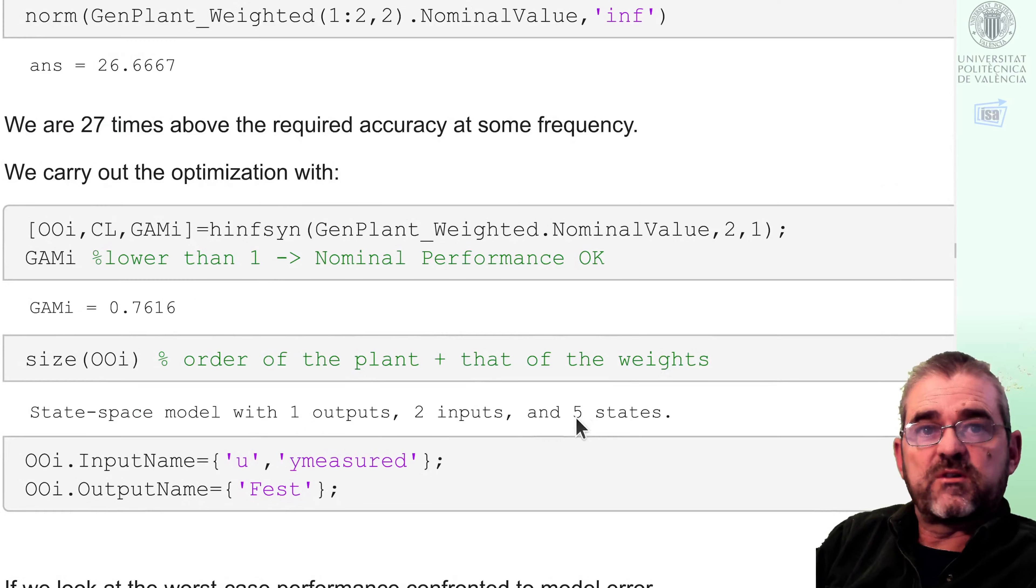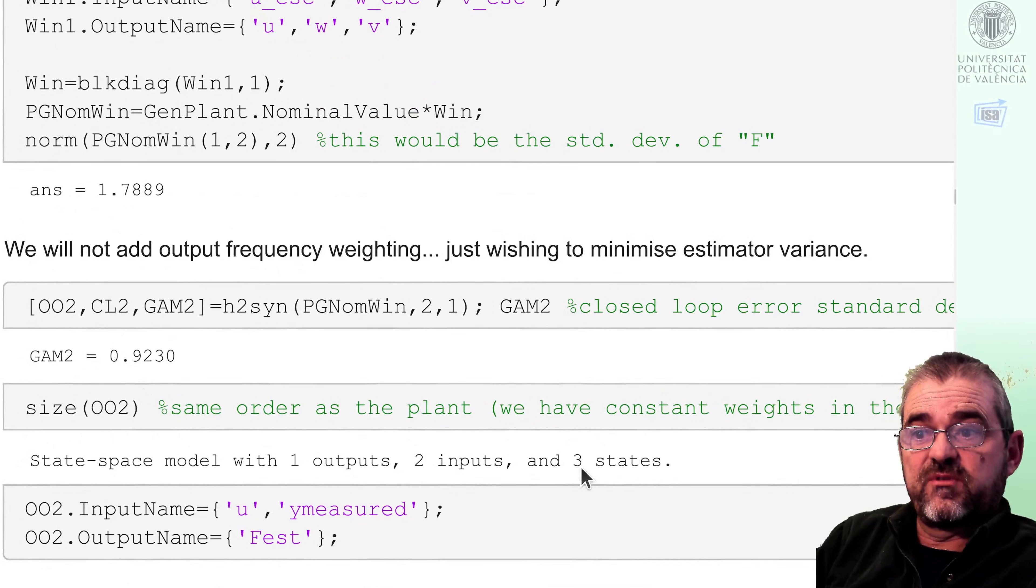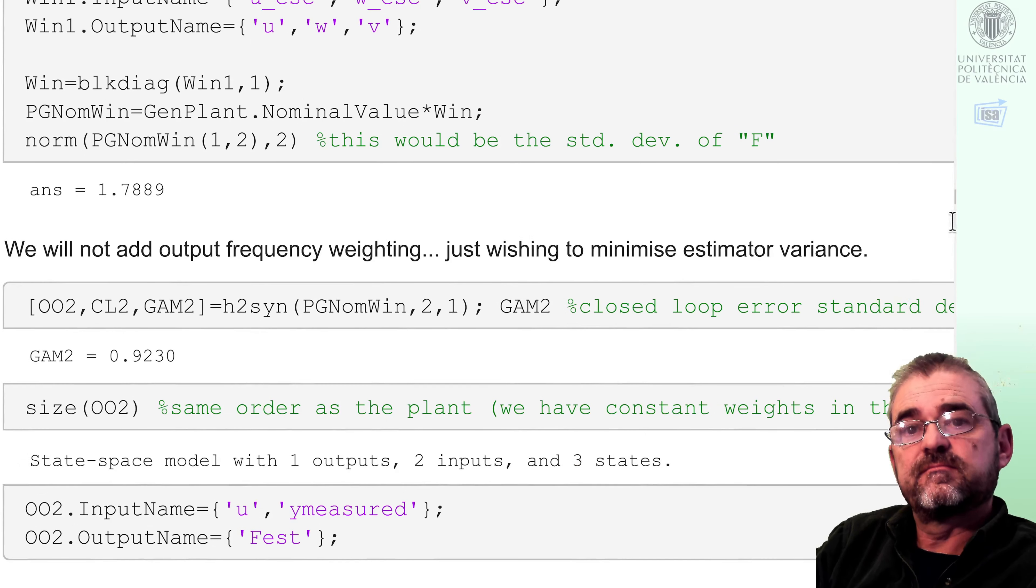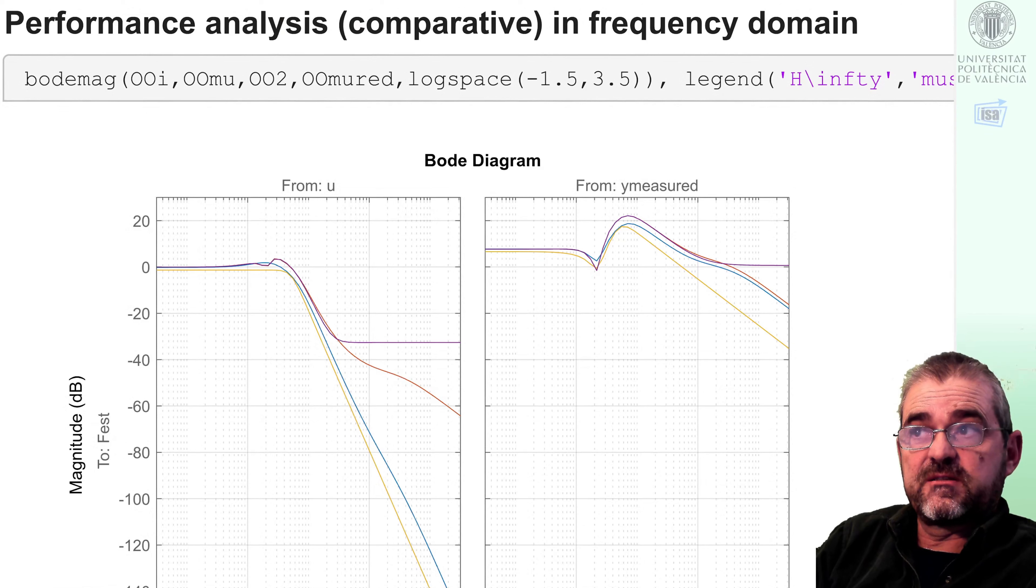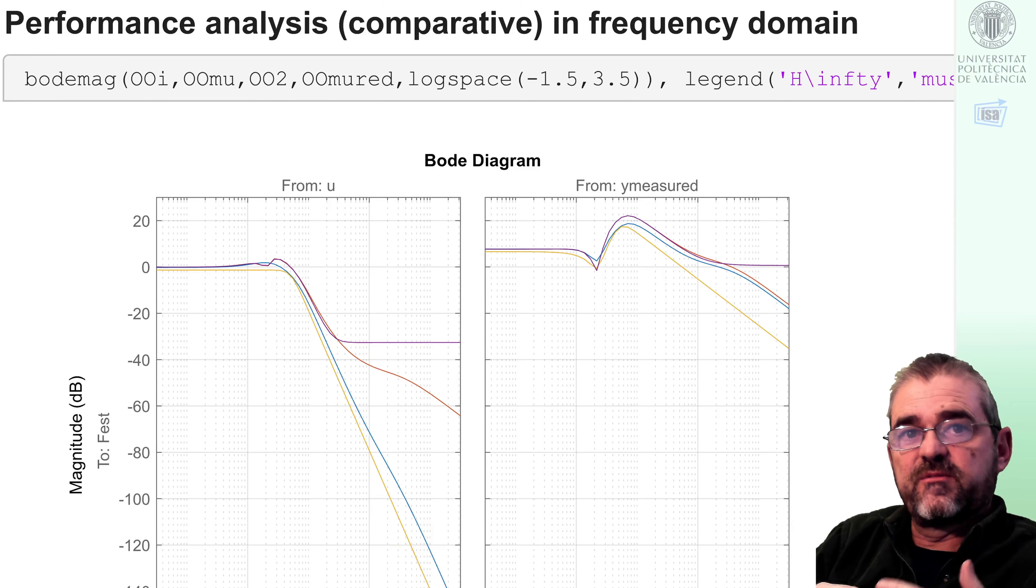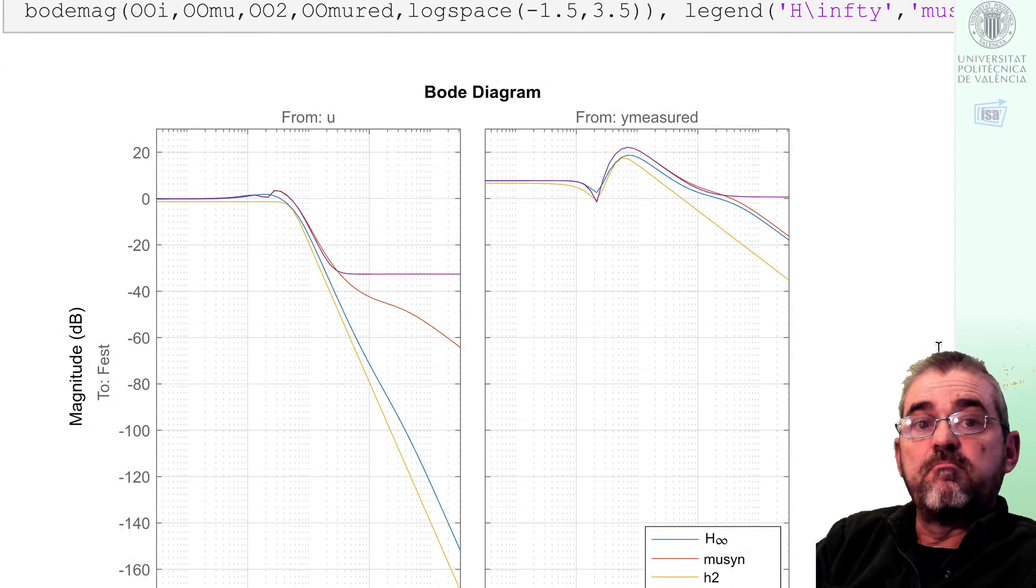That's the one, OO mu red, that we are going to compare with the H infinity, which was order five, and with the H2, that was order three. So we will carry out a performance analysis comparing the three design options in frequency domain, which is what the frequency templates are pursuing in H infinity and mu synthesis. H2 somehow minimizes the integral of the frequency domain, the variance and weights were different, so it kind of plays in another league, but it's good to see it just to compare what the different optimization criteria do. The last video of this case study will discuss performance in time domain.